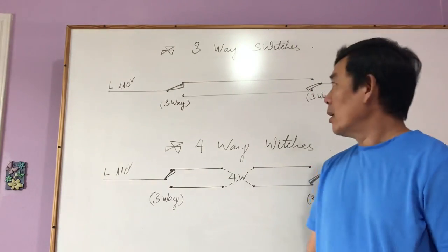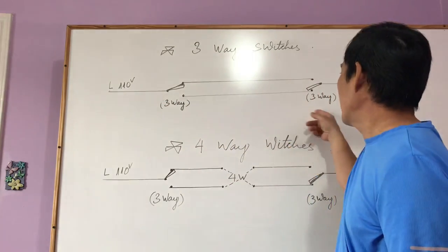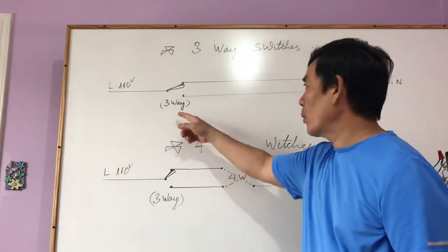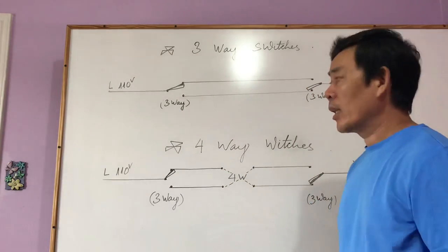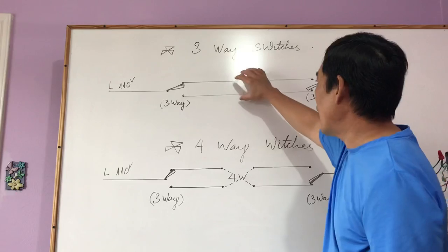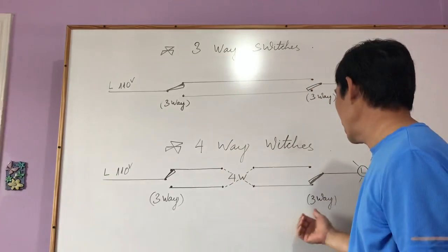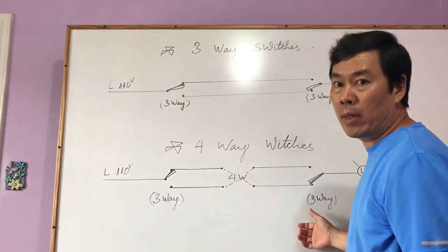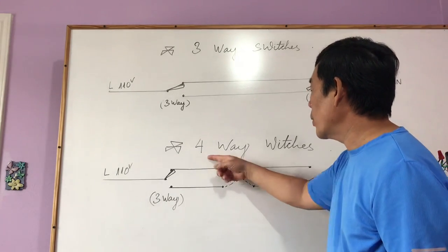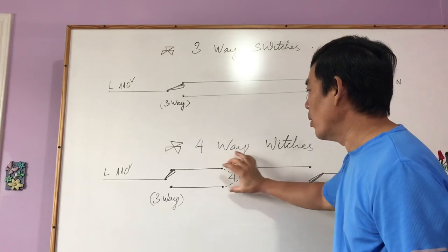Here on my board, I've already wired that. The first here is the 3-way switch — I have only 2 switches, 1 and 2. Down there is the 4-way switch, we are only at the middle here. One more switch makes it become the 4-way switch. The difference between the 4-way switch and 3-way switch is only the switch at the middle.